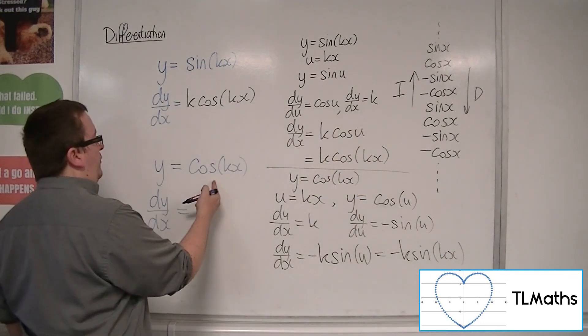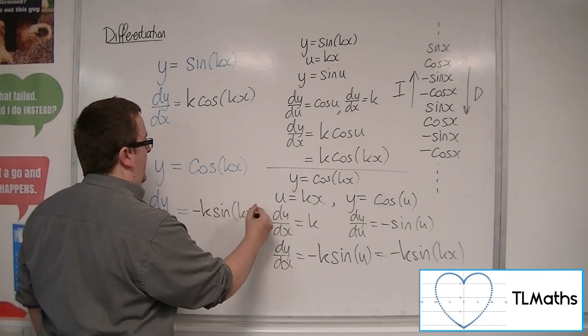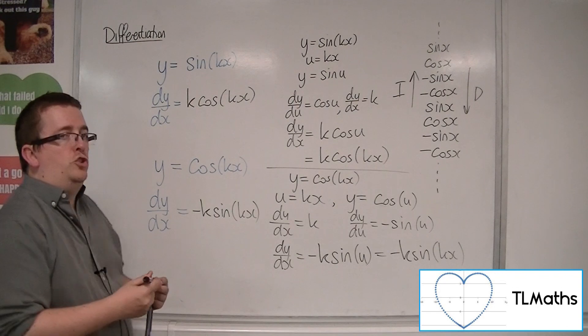So cosine of kx differentiates to minus k sine of kx using the chain rule.